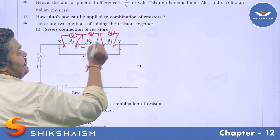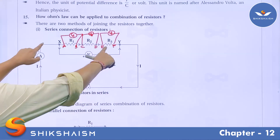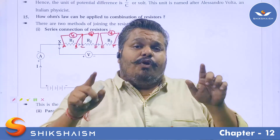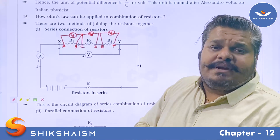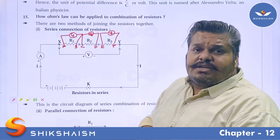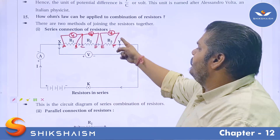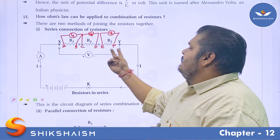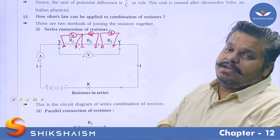The total voltage drop across all three resistors can be measured by connecting a voltmeter between terminals X and Y. Three voltmeters V1, V2, and V3 are used: V1 measures the voltage drop across R1, V2 measures the voltage drop across R2, and V3 measures the voltage drop across R3. The terminals are labeled ab for R1, cd for R2, and ef for R3.